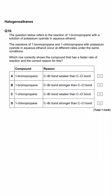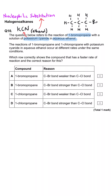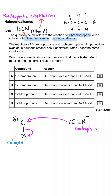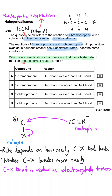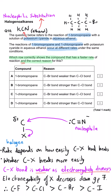The question compares the reaction rates of 1-bromopropane and 1-chloropropane with KCN in aqueous ethanol. The rate depends on how easily the carbon–halogen bond breaks: weaker bonds break more readily. Electronegativity decreases down the group, so the C–halogen bond gets weaker going down. The C–Br bond is weaker than C–Cl, so 1-bromopropane reacts faster — making A the correct answer.